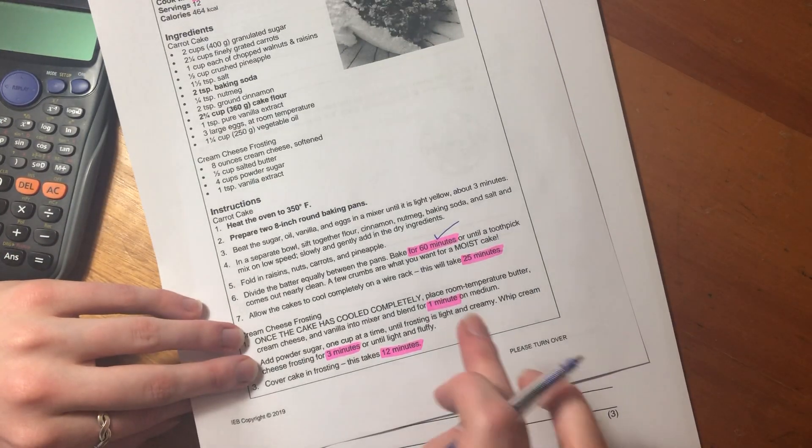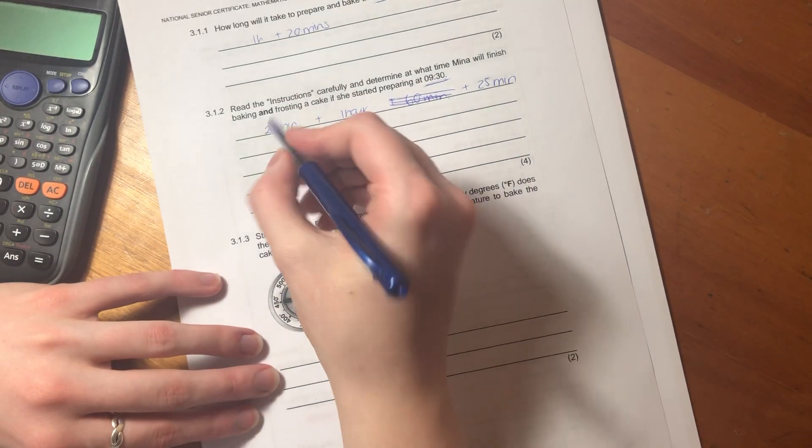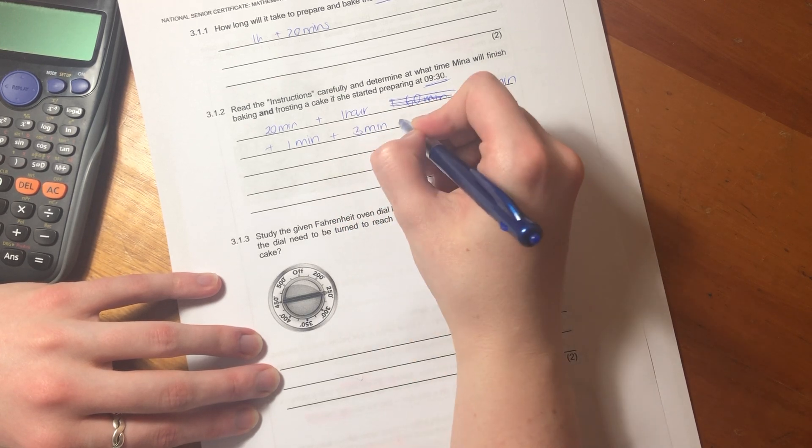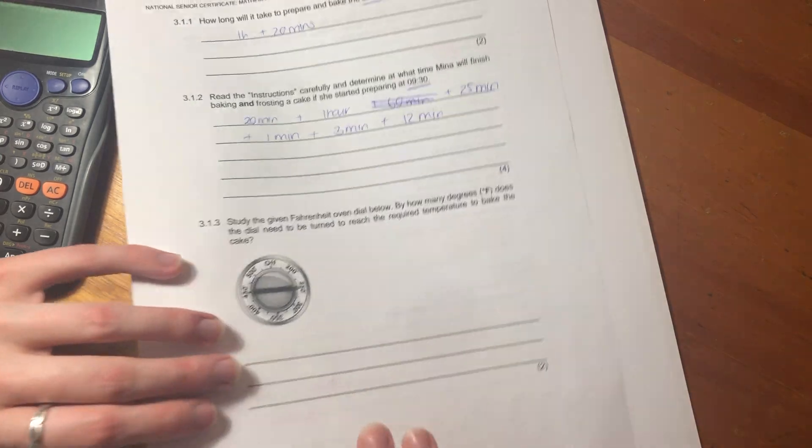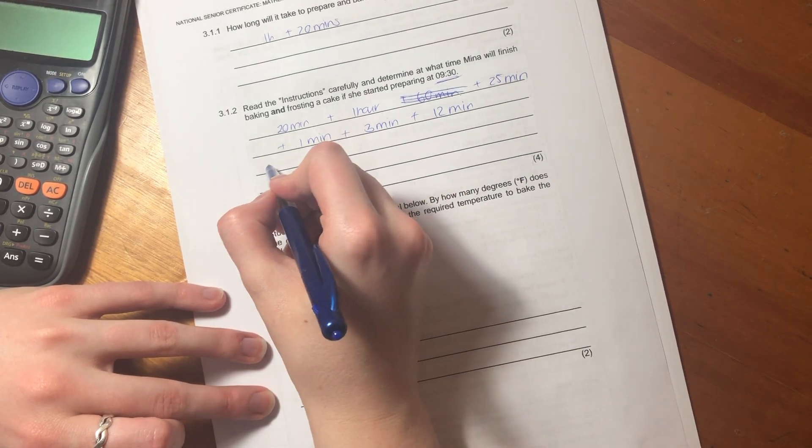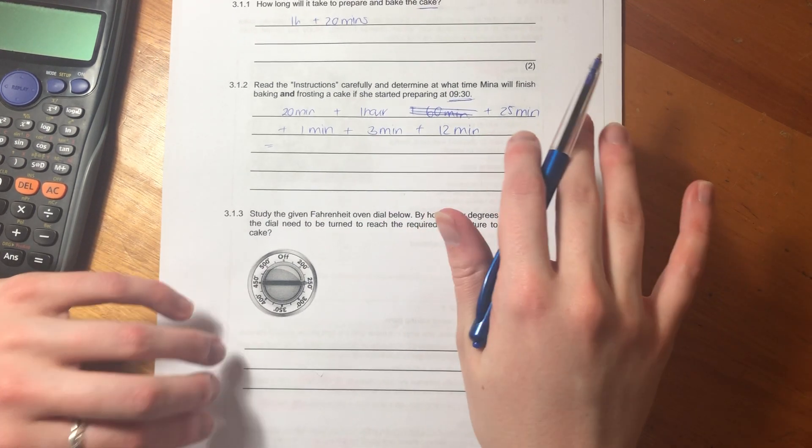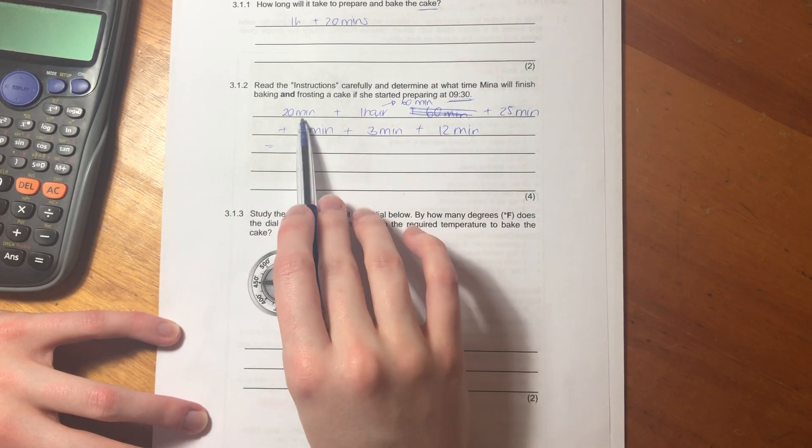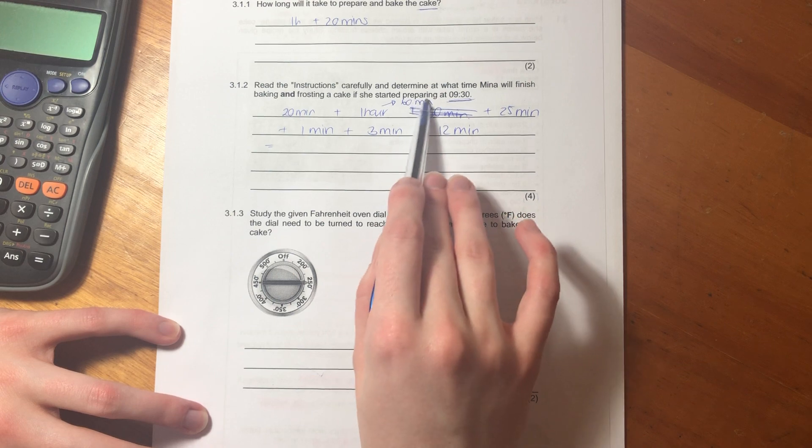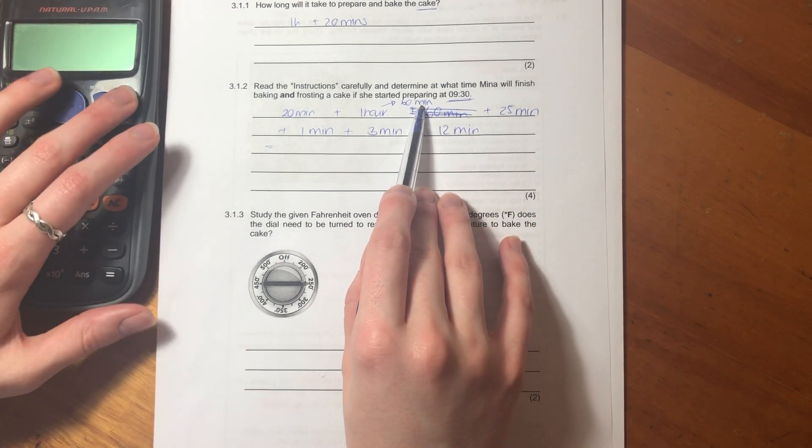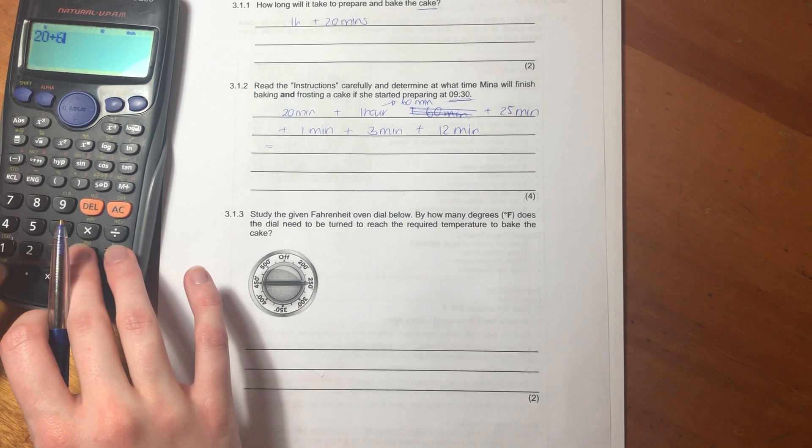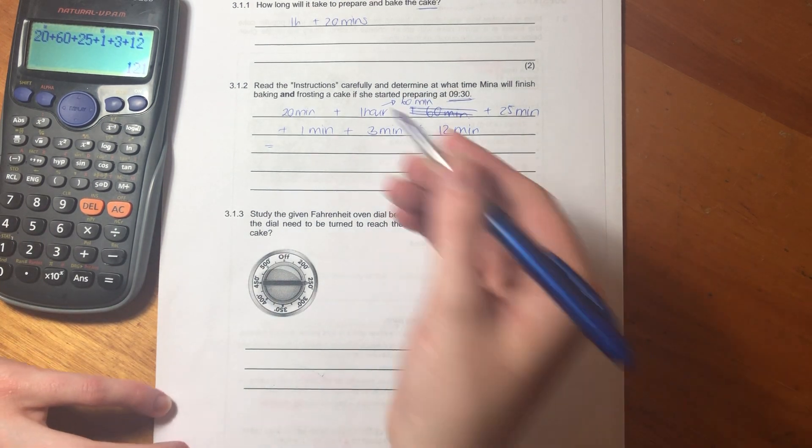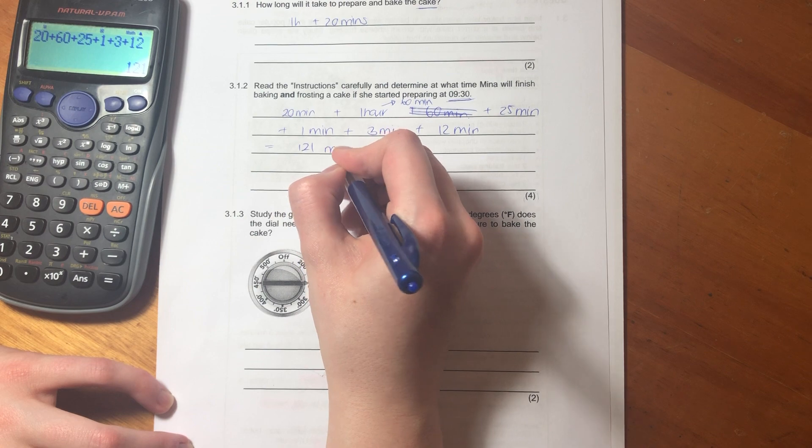Then 25 minutes, then one minute, three minutes, and 12 minutes. Plus one minute, plus three minutes, plus 12 minutes. Let me check if that's correct. Now we need to calculate how long each of these times are when we add them together. I'm just going to convert this into 60 minutes because it's easier when we're doing these calculations to make sure it's all in the same unit of measurement. 20 plus 60 plus 25 plus 1 plus 3 plus 12, and I am left with 121 minutes.